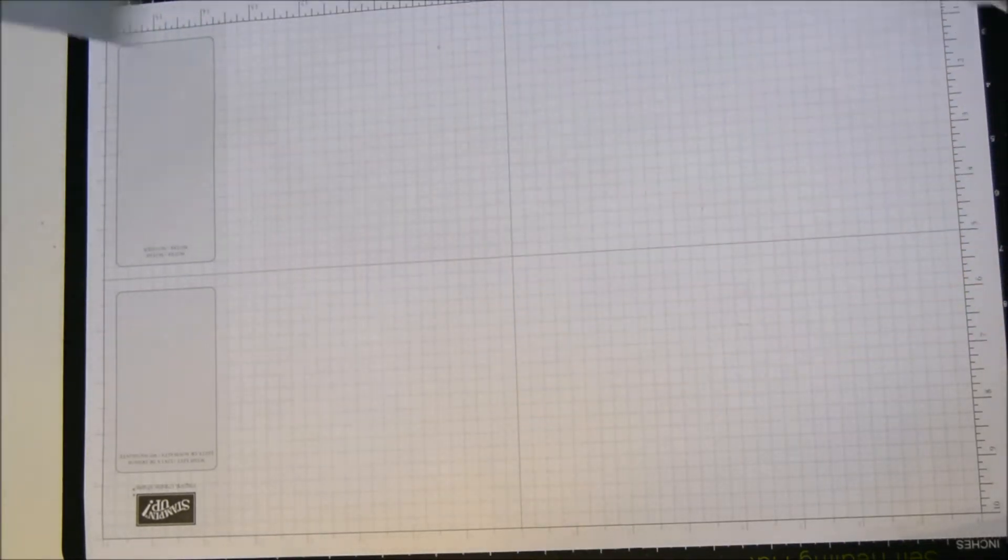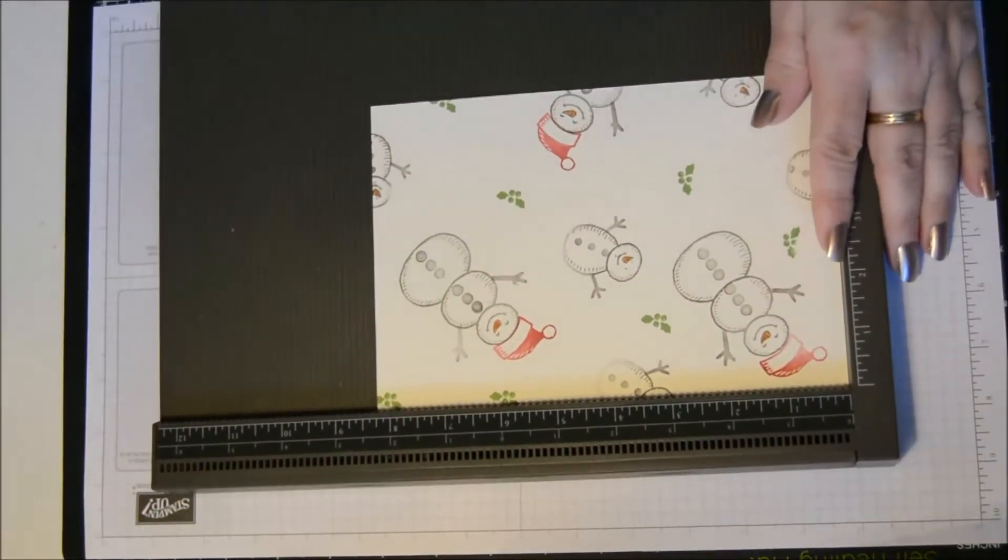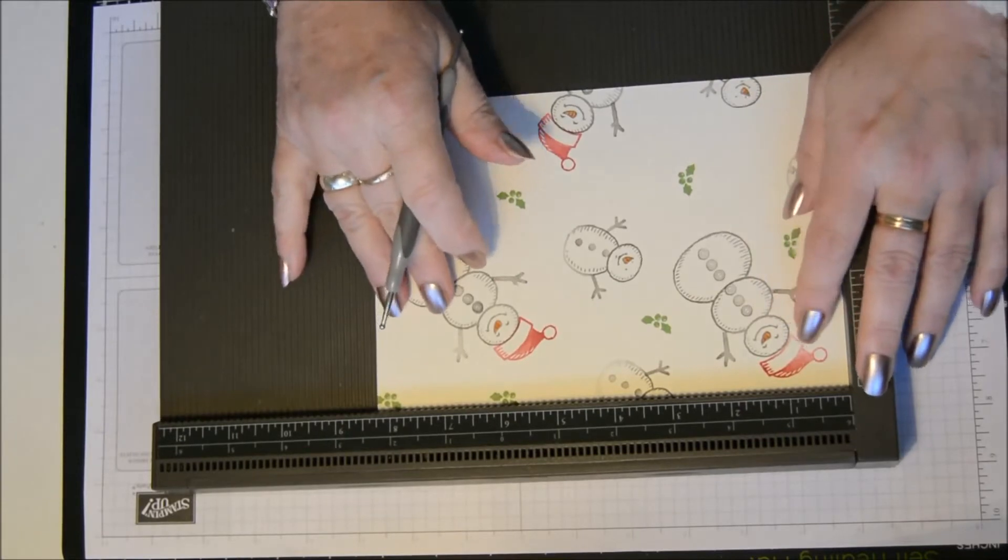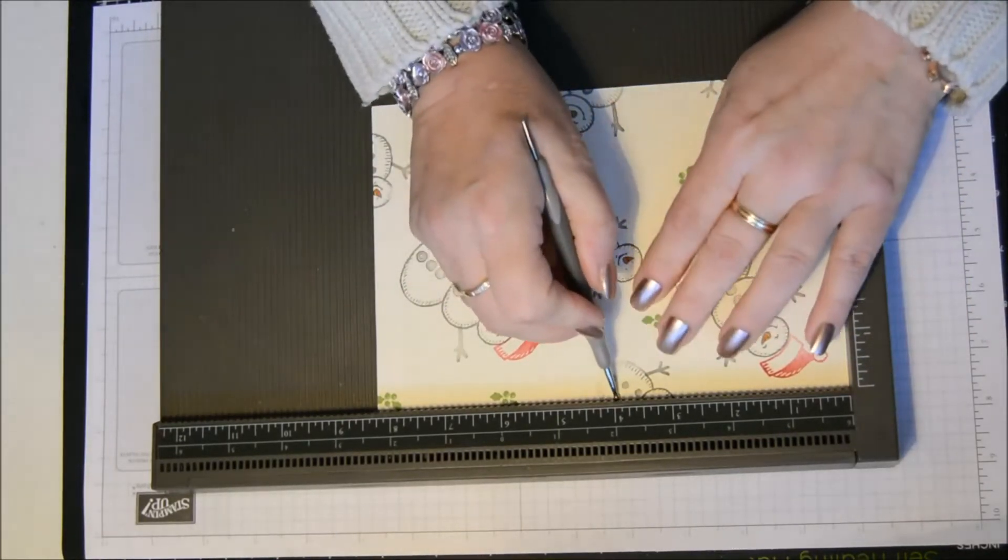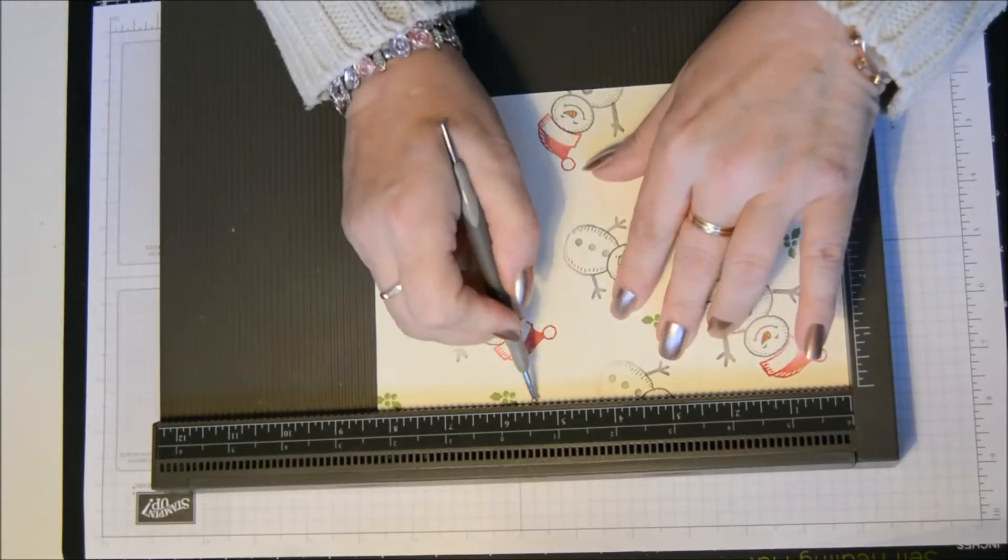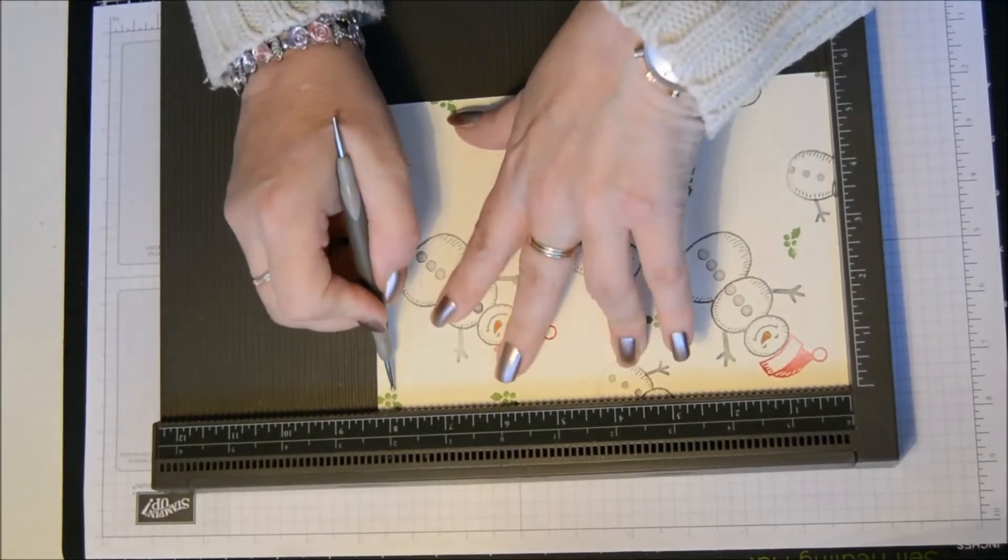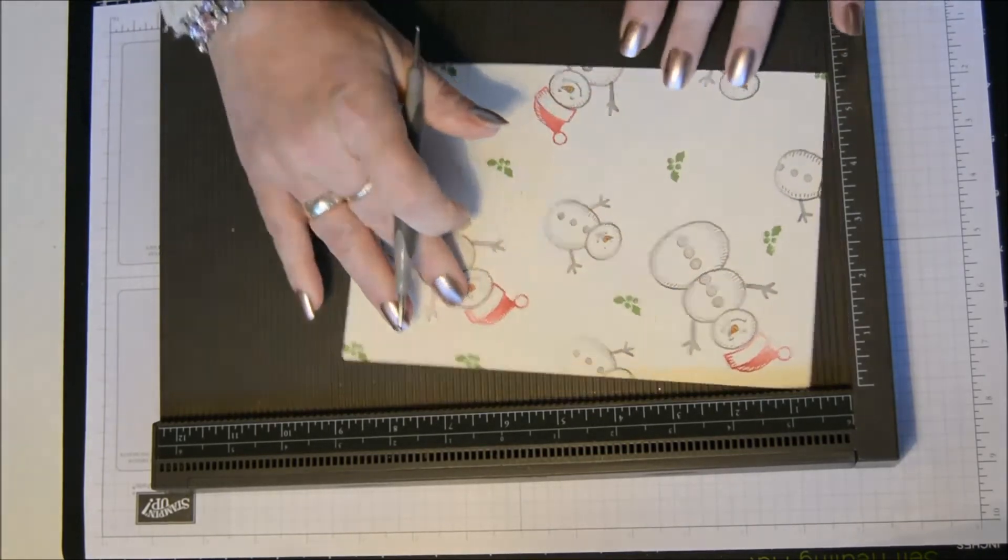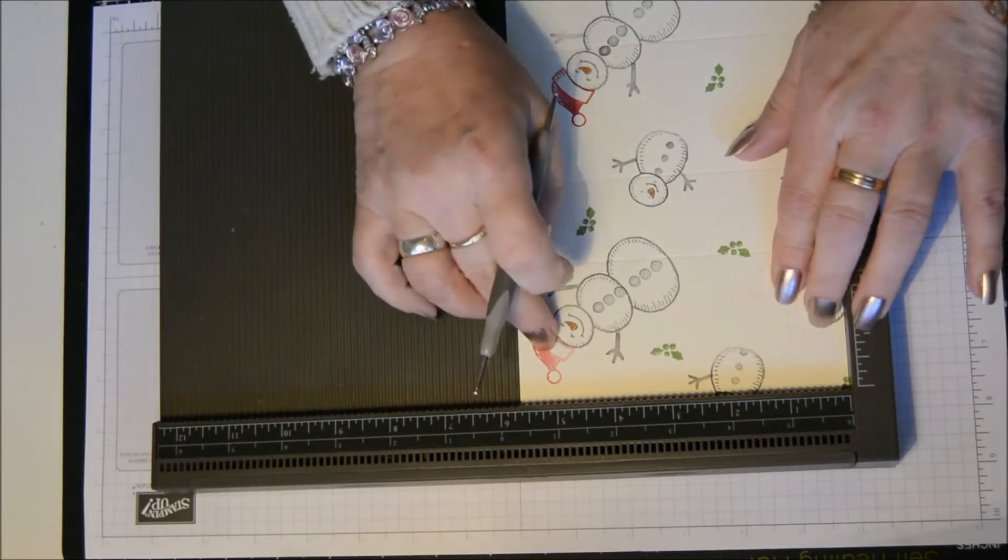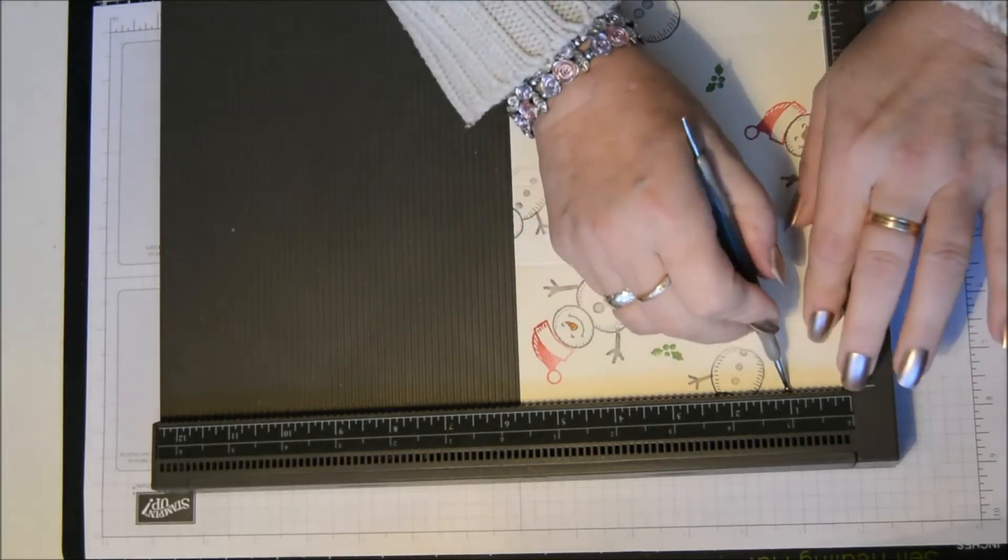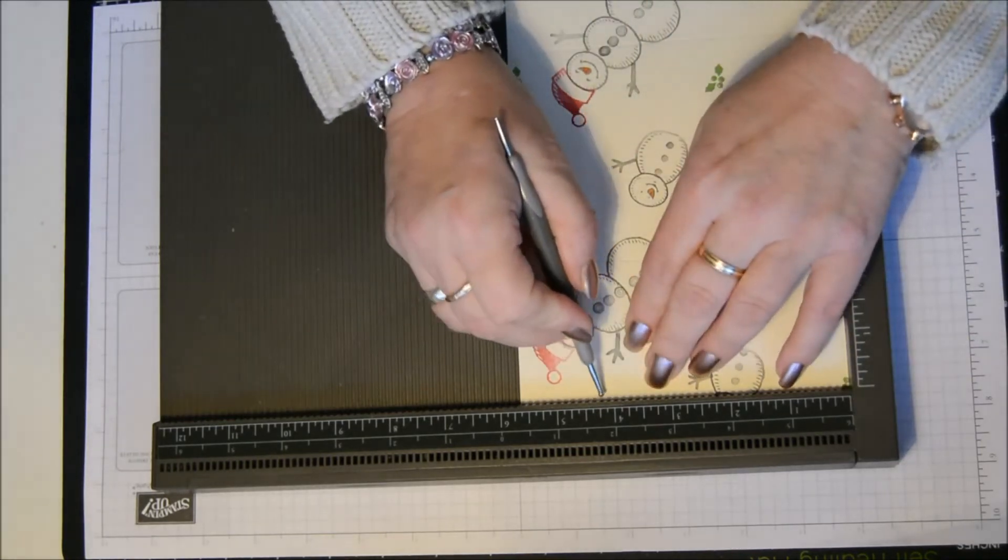So let's get our scoring board. We're going to score on the long side. Two and a half inches, four, six and a half, and eight. Then pop that round. Short side, little bit is at the bottom. And we're scoring that at one and four and a quarter.